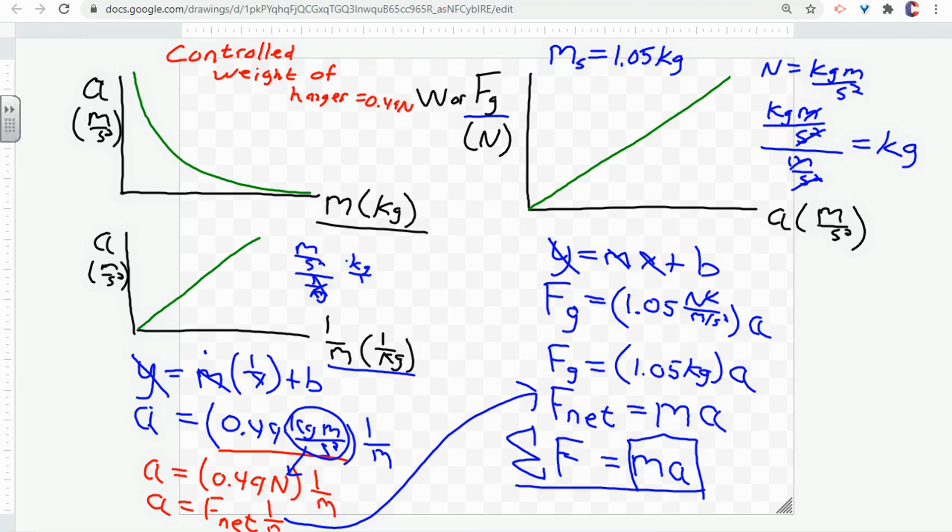So this is the wrapping up of the lab. Our slopes, again, represent the value of our control for each of the lab investigations. Changing weight and acceleration gave us a slope that was the system mass of 1.05 kilograms. And changing the mass and measuring the acceleration, the slope gave us the weight of the hanger, which was the net force that was causing the entire system to accelerate.